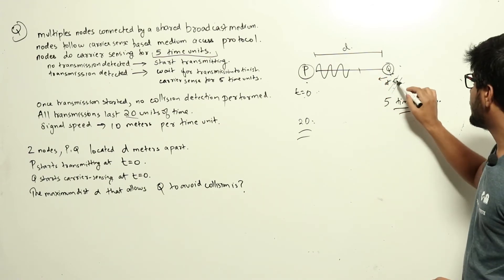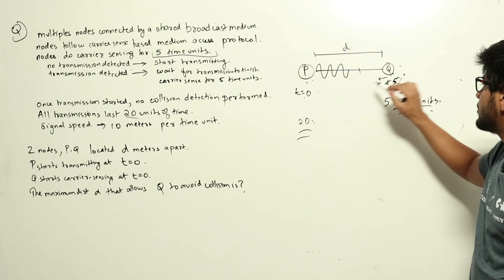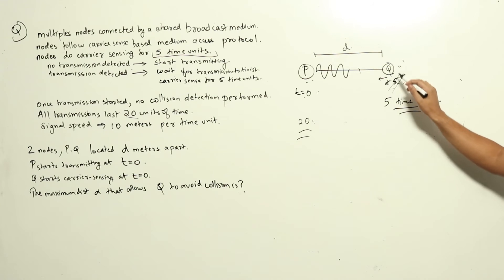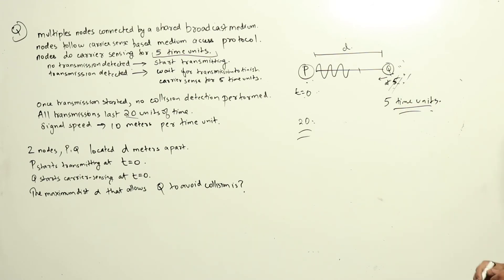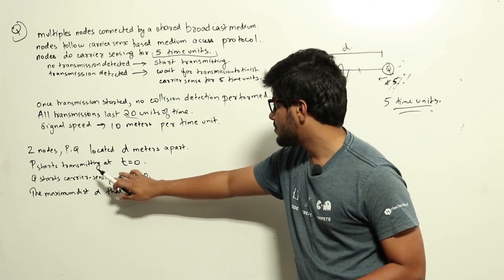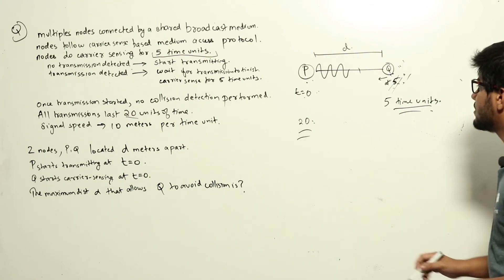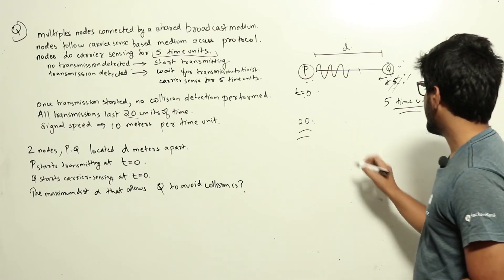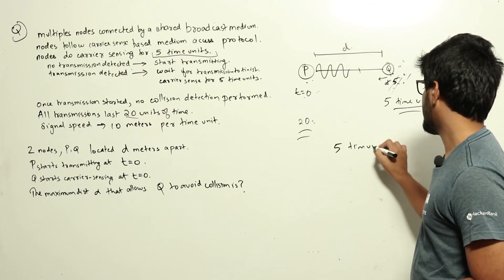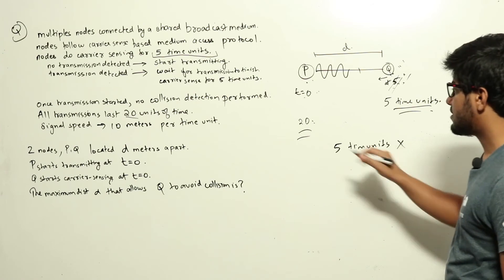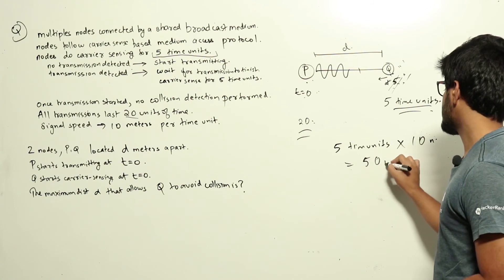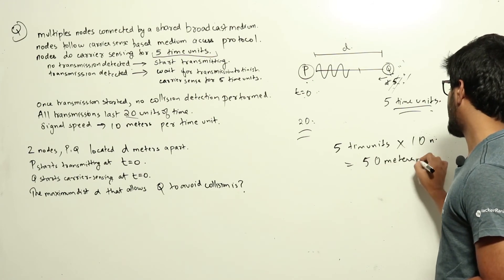For Q to avoid collision, P's signal must reach Q before five time units are over — only then will Q be able to detect it. If the signal doesn't reach Q before five time units, Q will also start transmitting, resulting in a collision. The signal speed is 10 meters per time unit, so in five time units it will travel 10 × 5 = 50 meters.